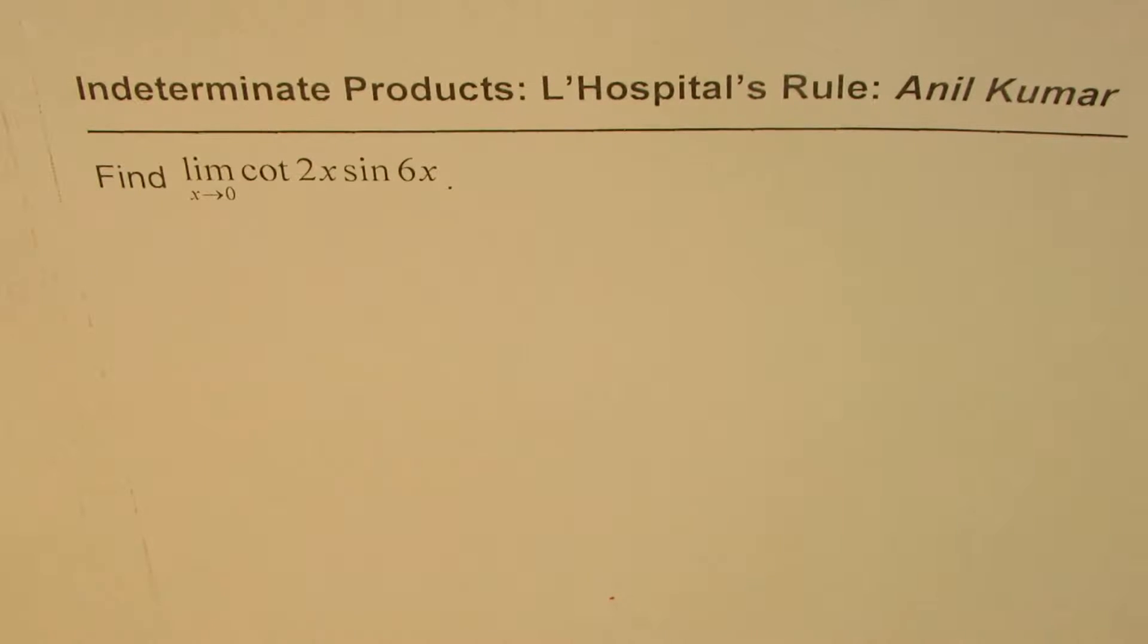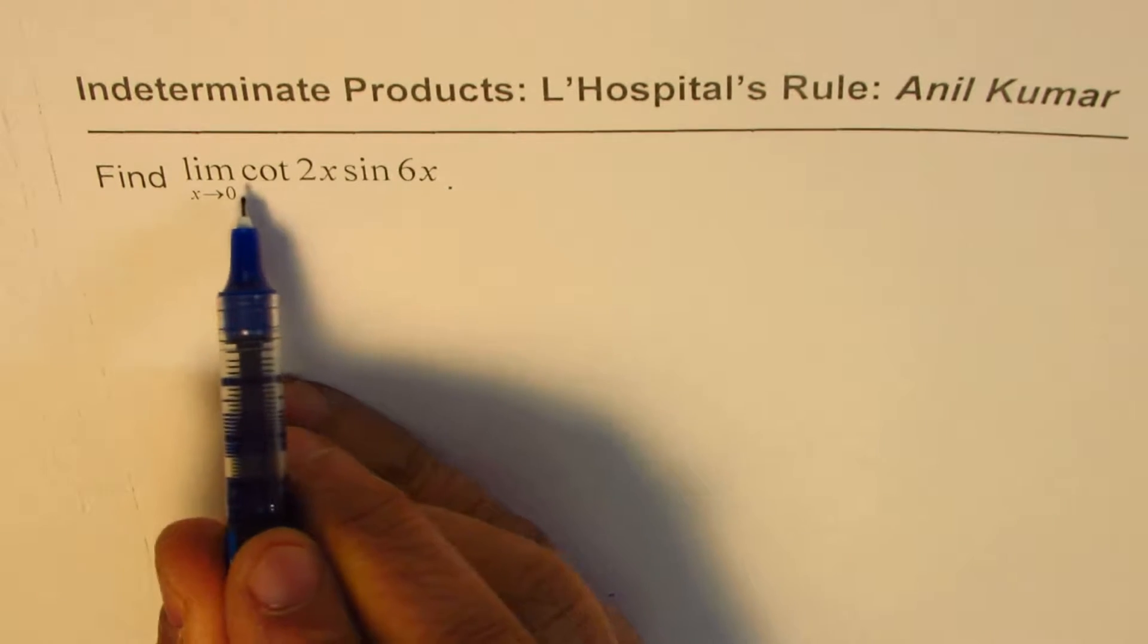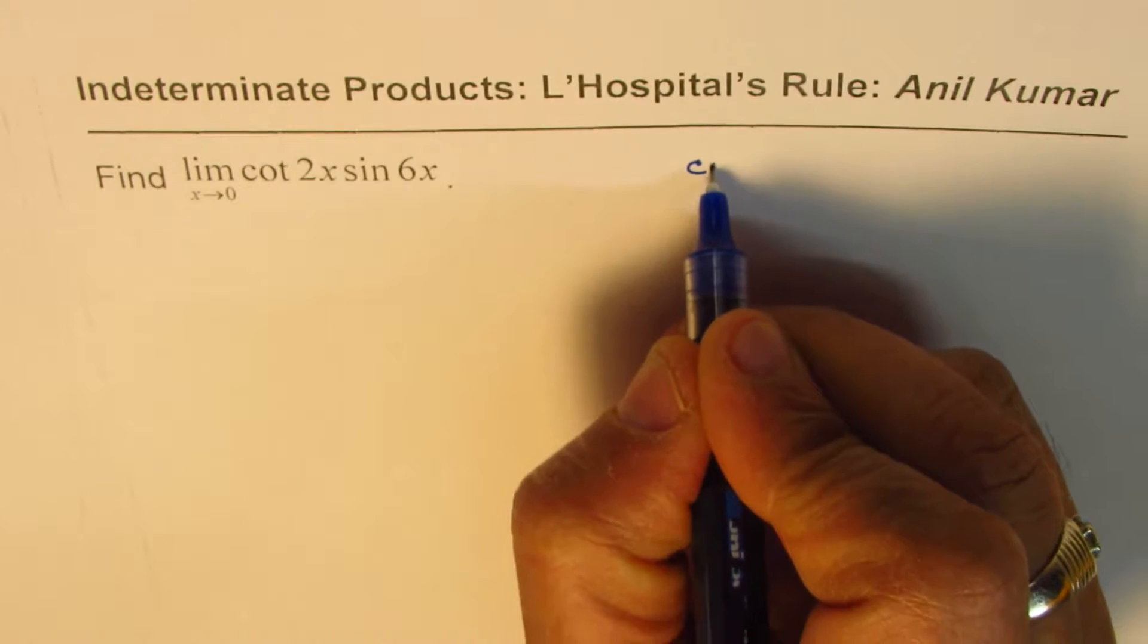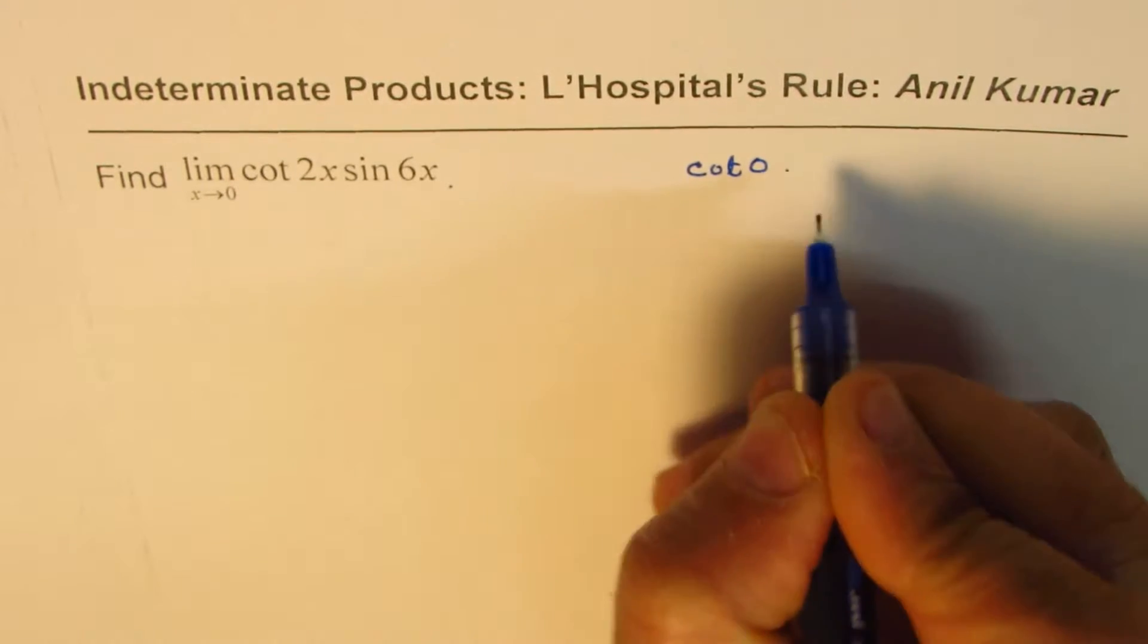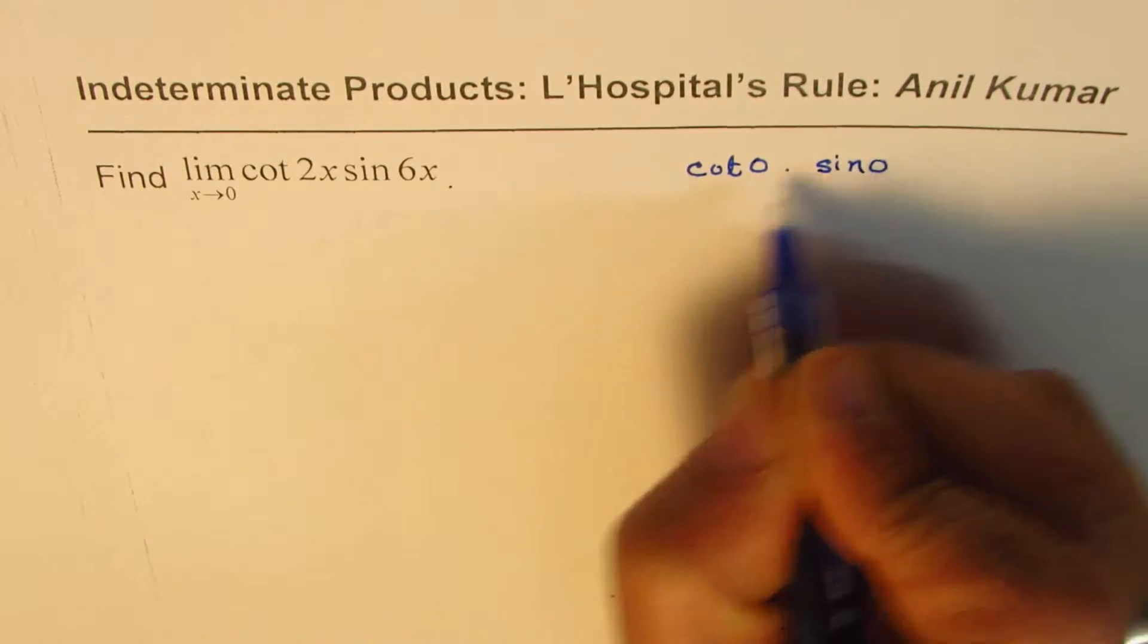Now in this particular case, if I substitute 0 into the expression, what do I get? I get cot of 0 times sine of 0.